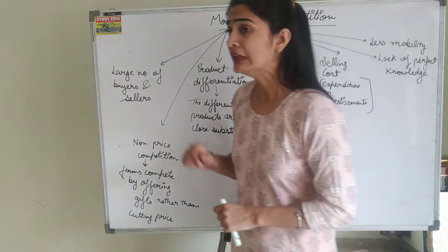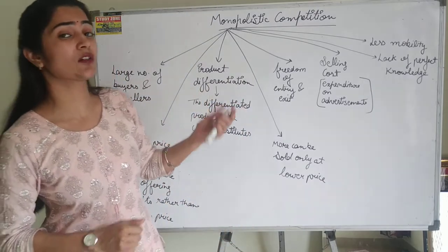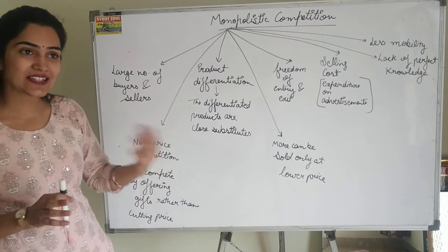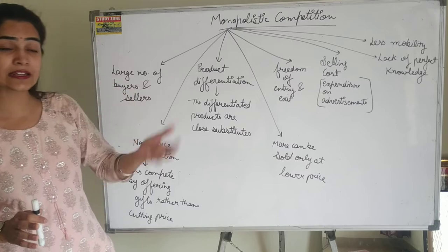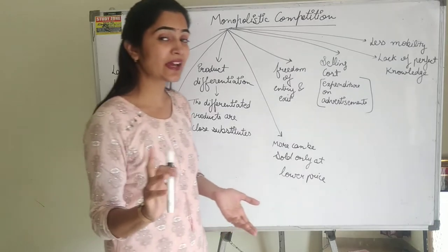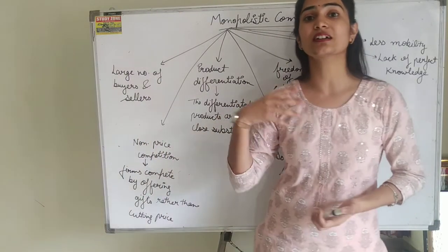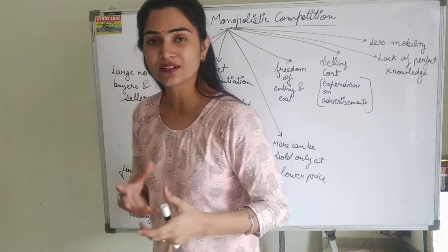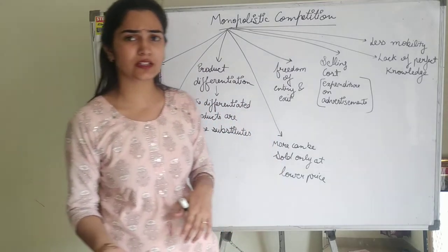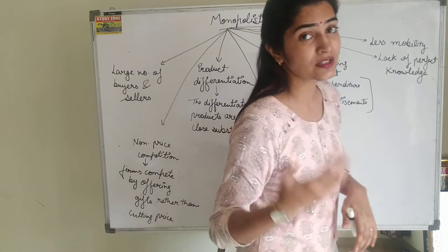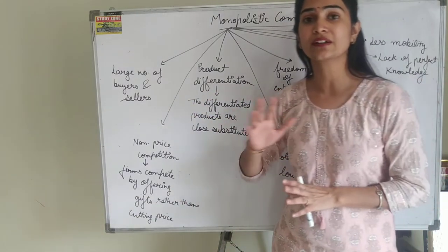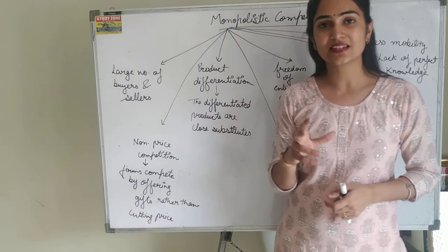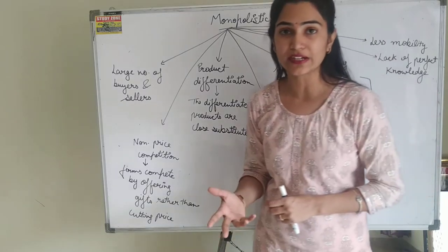The competition that exists in monopolistic competition is non-price competition. Non-price competition means they do not compete on price. If they want to increase their sales, they don't decrease their price. Instead, they will offer certain gifts, discounts, hampers, lotteries, and different offer schemes to promote their product against competitors. When they want to increase their sales, they don't decrease their price — they start to provide offers.